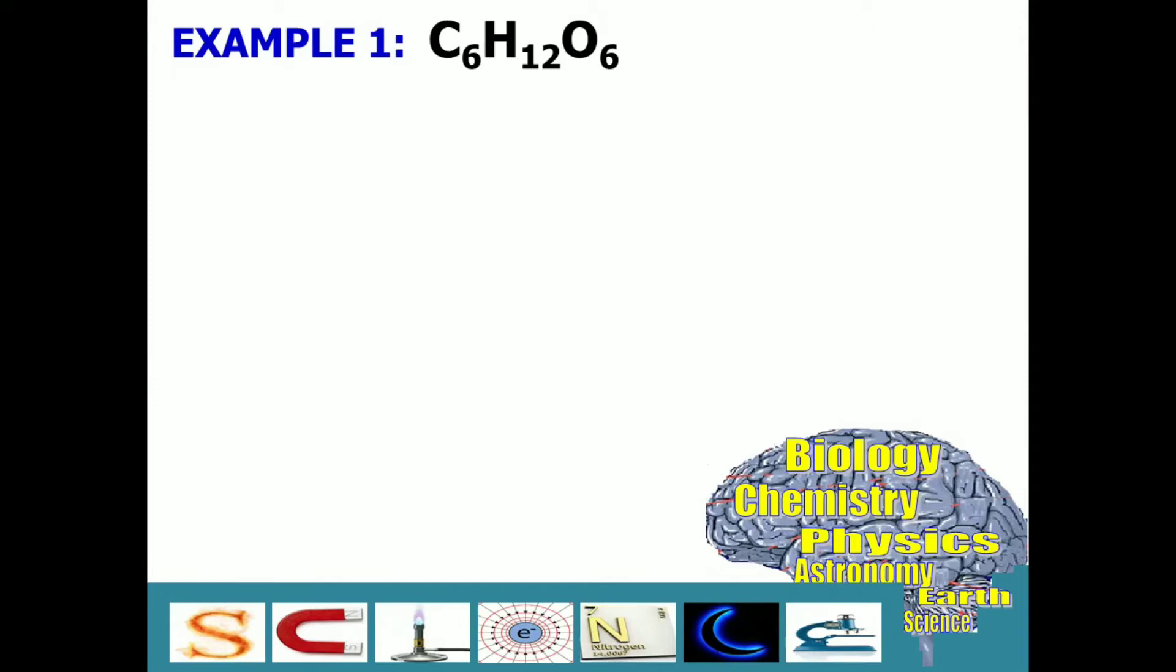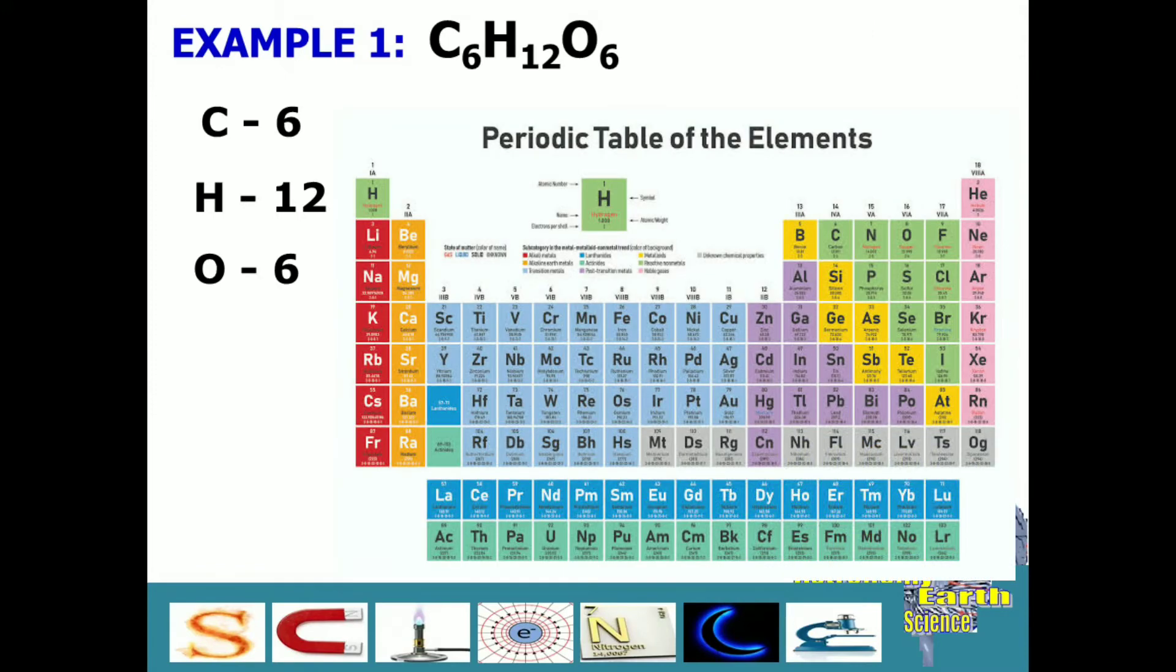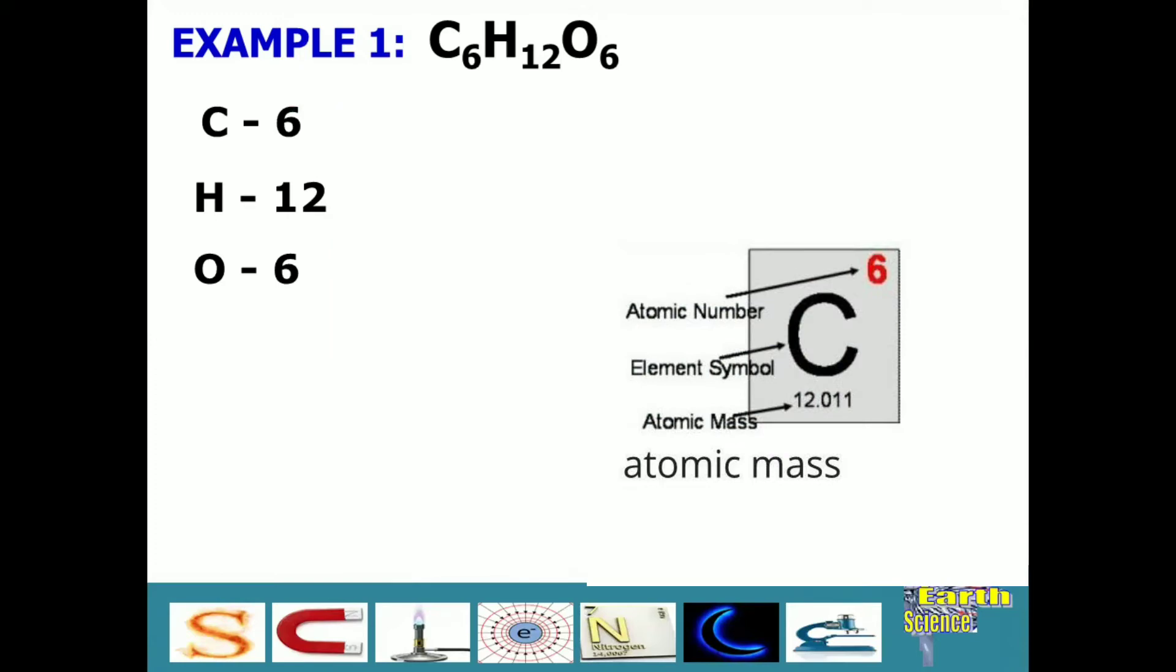Step number one, let us list down all the atoms or elements present in the compound. We got here 6 carbon, 12 hydrogen, and 6 oxygen. The next step is, you have to get your periodic table and check for their atomic masses.